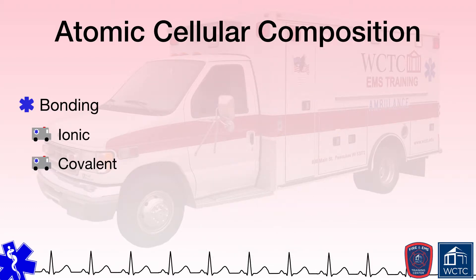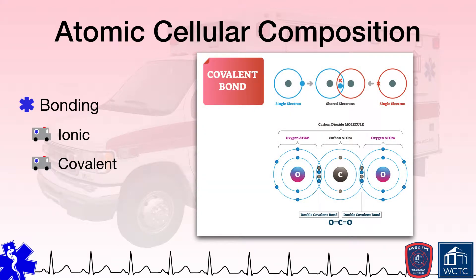A covalent bond is one between two nonmetal atoms, where the atoms actually share their valence electrons to achieve full valence orbitals. Here is an example of a covalent bond between one carbon atom and two oxygen atoms. Carbon has four valence electrons, yet its valence orbital can accommodate eight electrons. Oxygen has six valence electrons and can have eight in its valence orbital. By sharing electrons, each atom believes it has a full valence orbital. Covalently bonded molecules tend to have lower melting and boiling points than ionically bonded molecules, which means these molecules can be gases, liquids, or solids at room temperature. Not all covalently bonded molecules have a low melting point, however, depending upon the properties of that molecule.